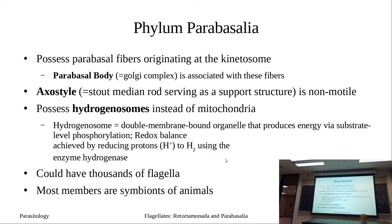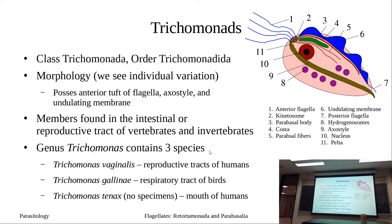Parabasalia have a few new structures: the parabasal body, which is the Golgi; the axostyle, the stout median rod we can see. They have hydrogenosomes, which you really can't see in our images. You're going to see flagella on these, just like we saw with the Retortamonadida and Giardia. The group we're interested in are the trichomonads, and the diagram is pretty darn close.